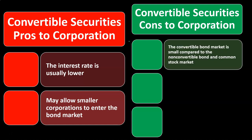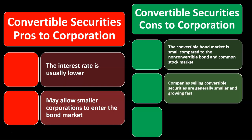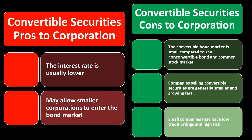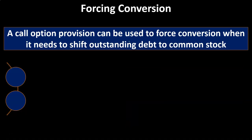Convertible security cons to the corporation: the convertible bond market is small compared to the non-convertible bond and common stock markets. Companies selling convertible securities are generally smaller and growing fast, and small companies may have low credit ratings and high risk when issuing convertible securities.